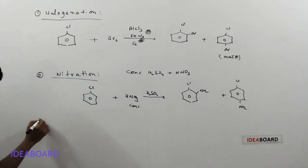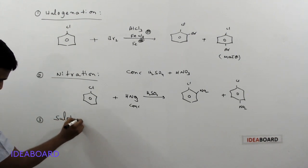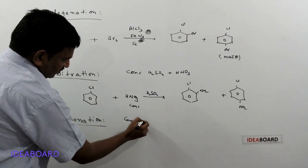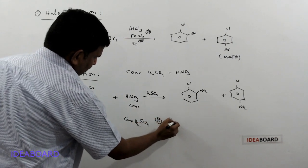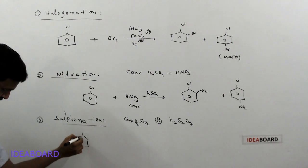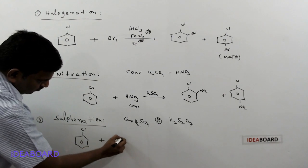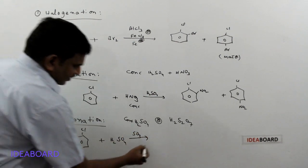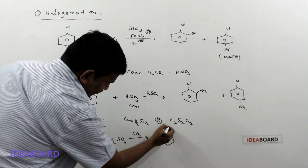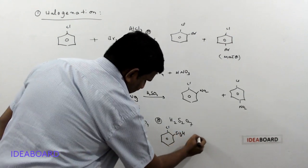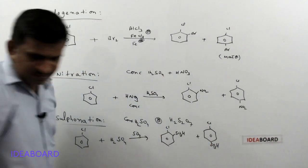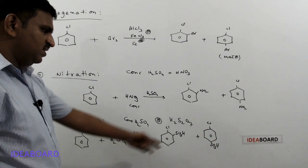The third one is sulfonation. In the sulfonation process, we use concentrated sulfuric acid (H₂SO₄) or fuming sulfuric acid (oleum, H₂S₂O₇) as a reagent. When chlorobenzene reacts with H₂SO₄ plus SO₃ mixture, it gives ortho-chlorobenzenesulfonic acid or para-chlorobenzenesulfonic acid — that is, the -SO₃H group is added at ortho and para positions.